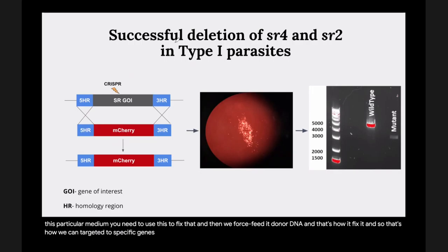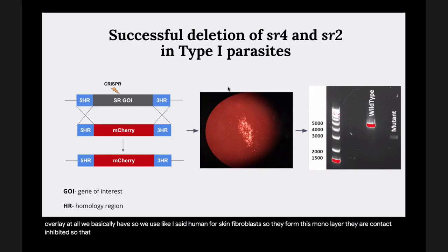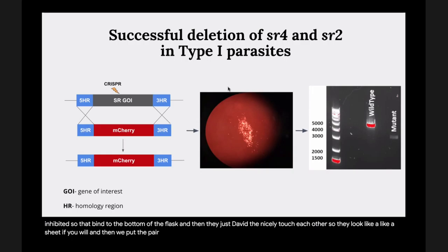Q: For the plaque assay, do you use methyl cellulose overlay or agarose overlay? We don't use any overlay at all. We use human foreskin fibroblasts — they form a monolayer, are contact inhibited, bind to the bottom of the flask, and look like a sheet. We put the parasite in and let the parasite do its thing without moving them.